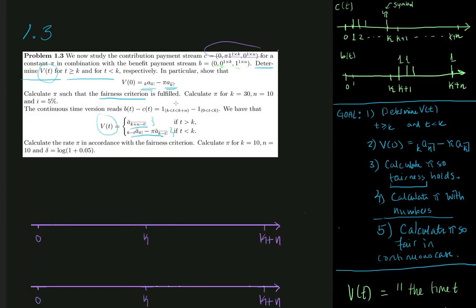So now we will try to calculate the rate pi in accordance with the fairness criterion in the continuous time version. And let us first try to understand how the payment streams look in the continuous time version.